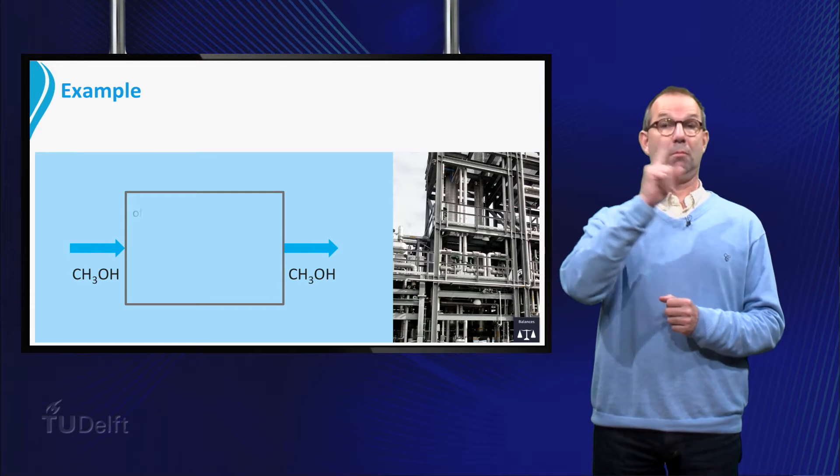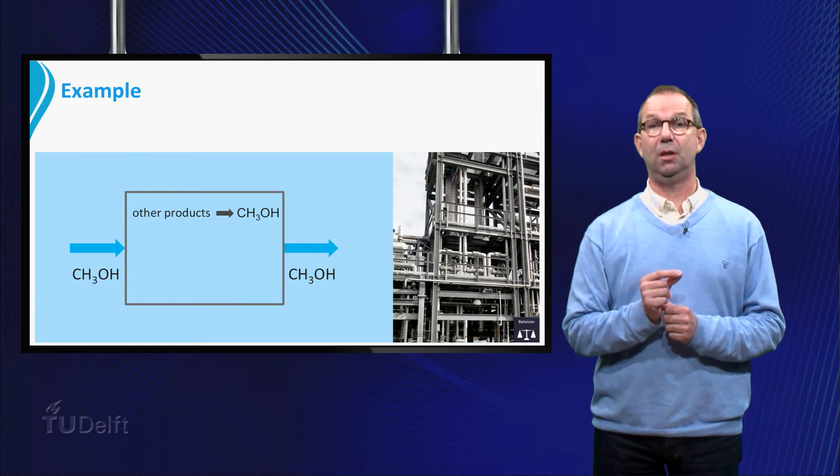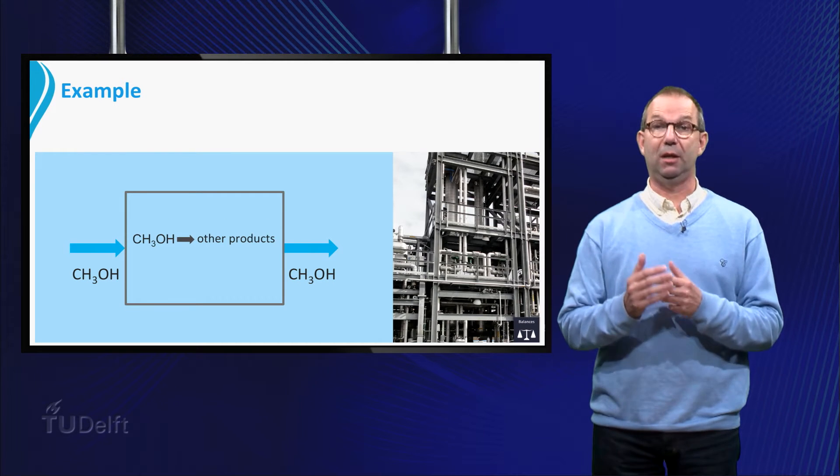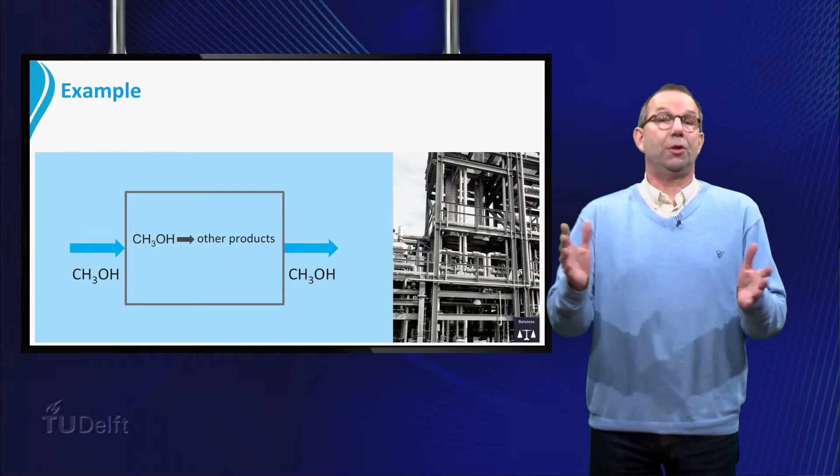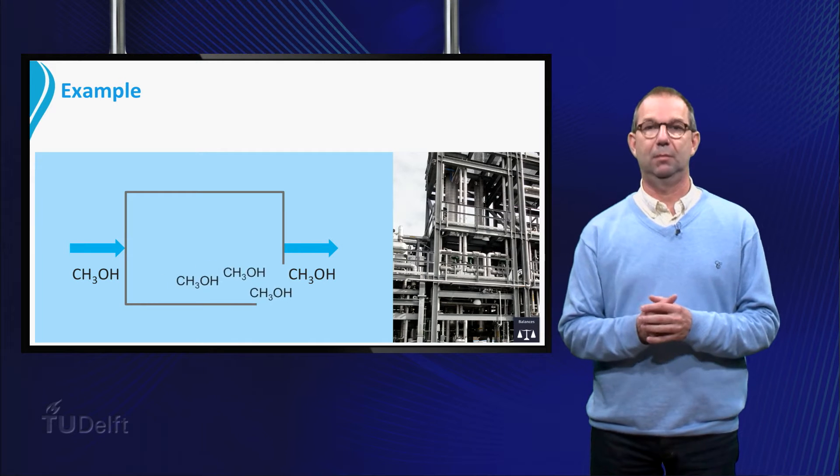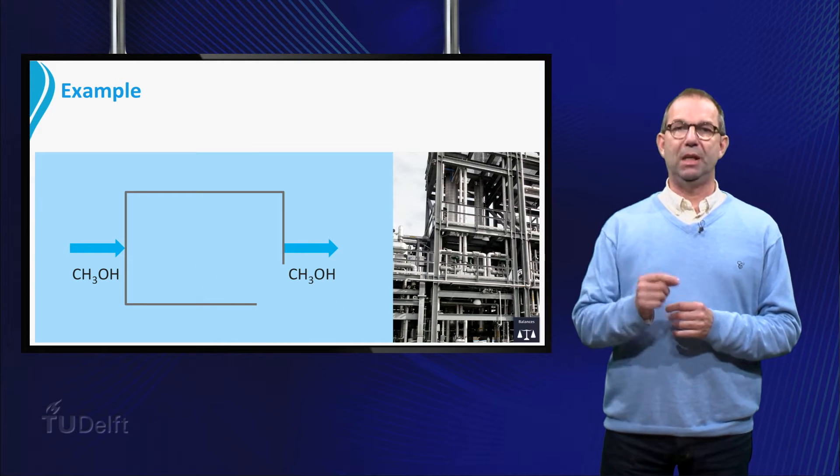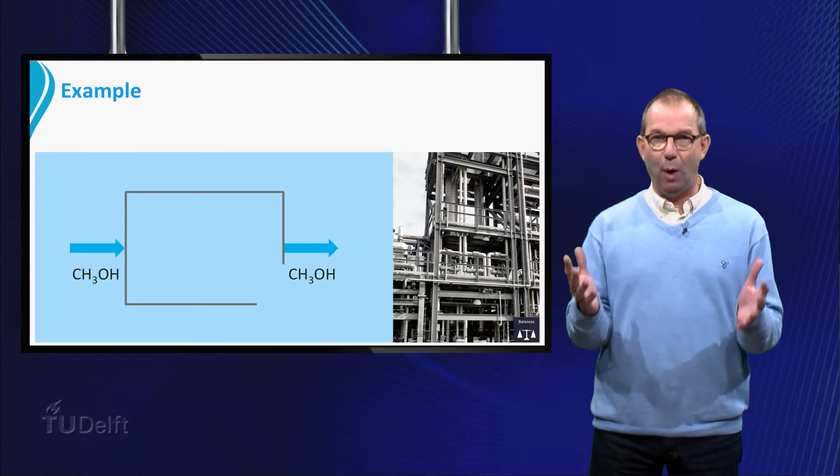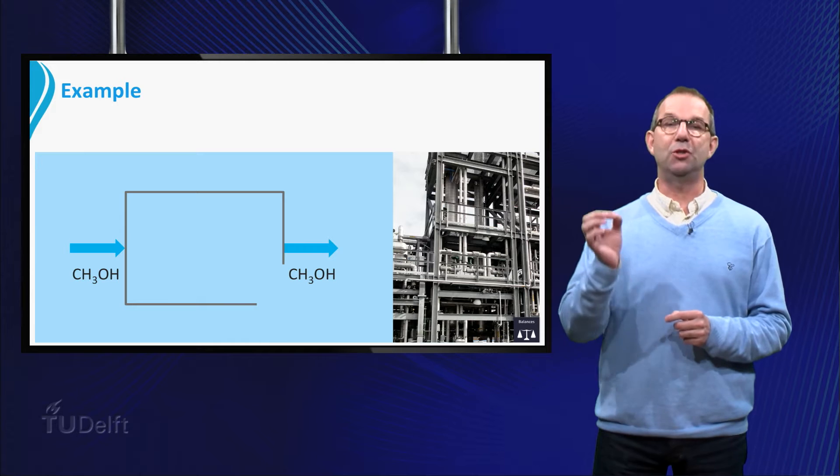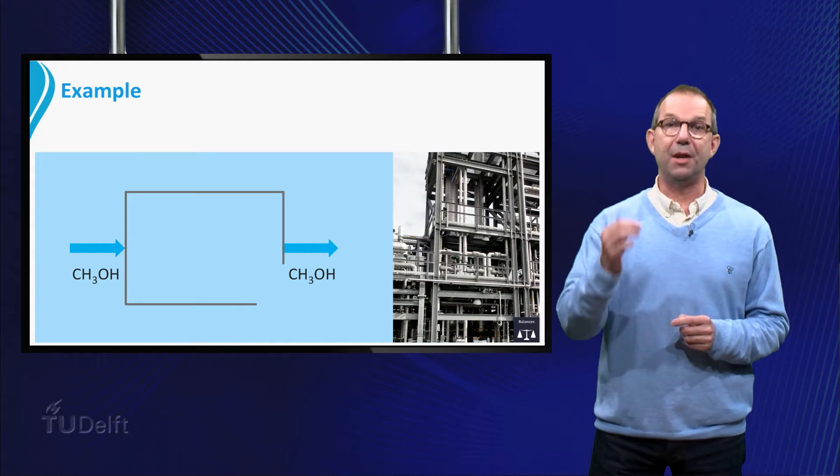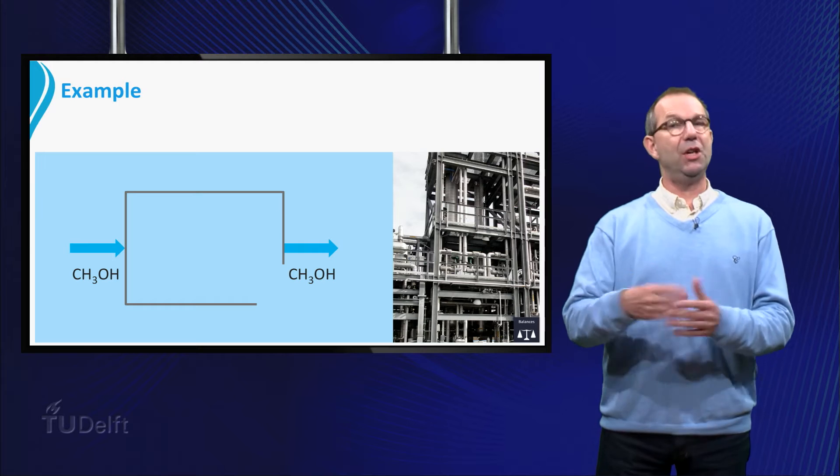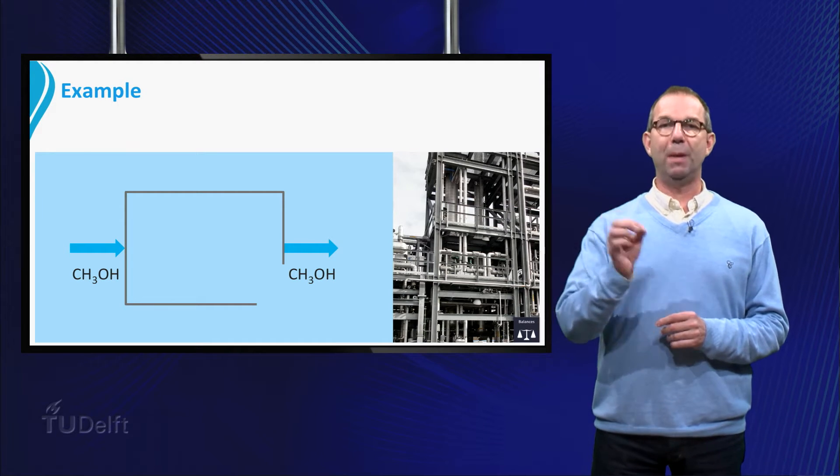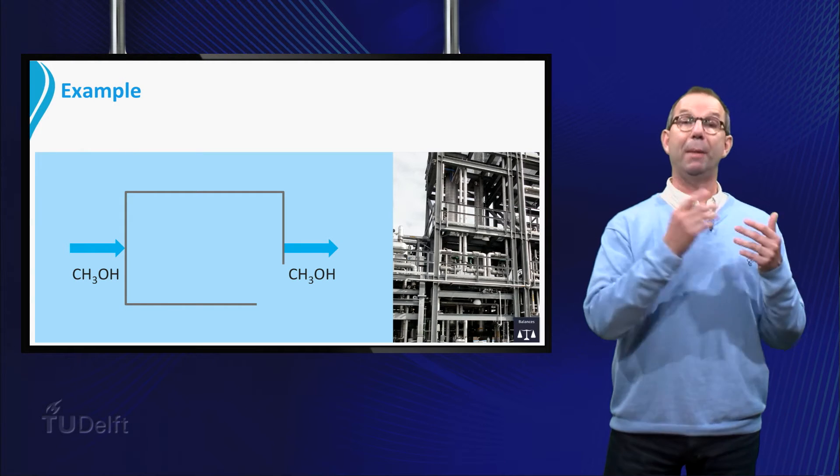We could think of, methanol is produced in the process, or methanol is chemically converted into other products, or there is a methanol leak. Leaking would mean that there is another outflow of methanol. We could measure that as well, and calculate if the two outflows together are now the same as the inflow. In this example, we take that there is no leak, and that more methanol is flowing into the reactor than is coming out.